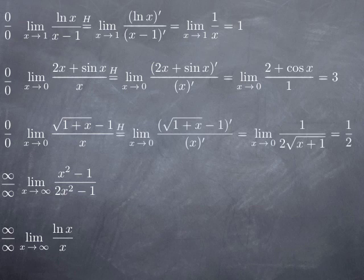For the third example, the assumptions for L'Hôpital are verified, so applying it, the limit equals the limit of the quotient of the derivatives. The derivative of (√(1+x) − 1) is 1/(2√(1+x)), and the derivative of x is 1. So we get the limit at 0 of 1/(2√(x+1)), which is 1/2.